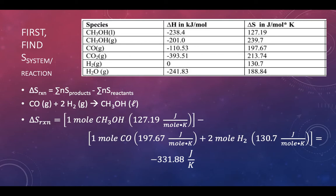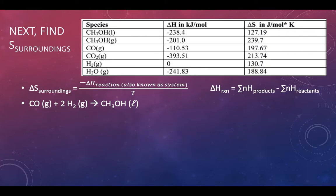If the system is more disordered, delta S is positive. If it's more ordered and structured, delta S is negative. But to determine thermodynamic favorability, we need a positive delta S for the universe, so we also have to take the surroundings into account. To find delta S of the surroundings, we take delta H of the reaction, flip the sign, and divide by temperature.